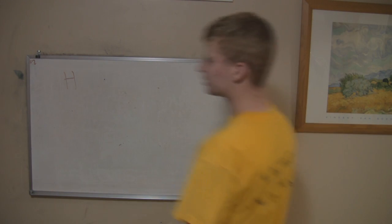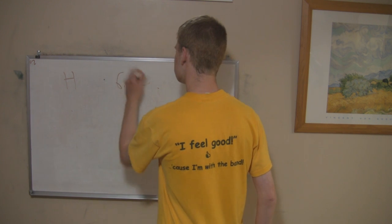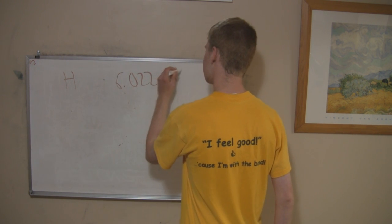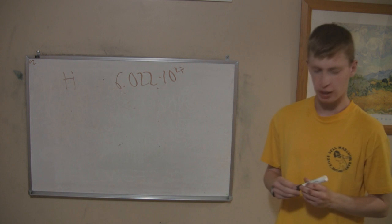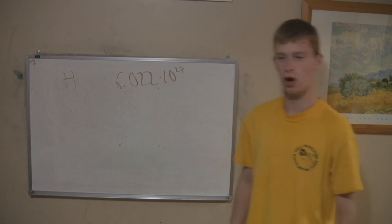Alright, he got it all wrong. It's not 6.02 times 10 to the 23rd. It's 6.022 times 10 to the 23rd. And that is the unit of physical quantity that describes the number of atomic entities that there are in 12 grams of carbon-12.